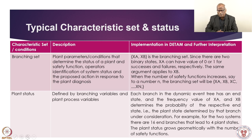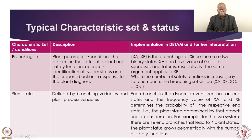Let us now see the typical characteristic set for event tree characterization. We discuss branching sets first. Plant parameter conditions determine the status of a plant and safety function, along with operator identification of those statuses and proposed actions in response to plant diagnosis — this is expressed by branching sets. Let us say X_a and X_b is the branching set. Since there are two binary events, X_a can have a value of 0 or 1 for success and failure respectively. When the number of safety functions increases to n, the branching set will be X_a, X_b, X_c, ... X_n.